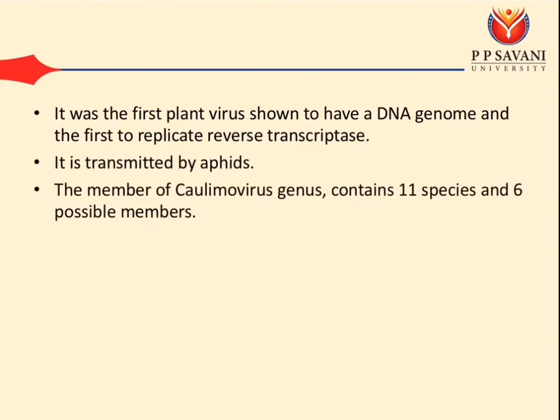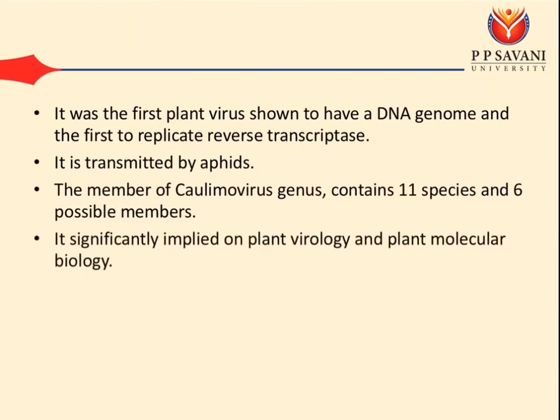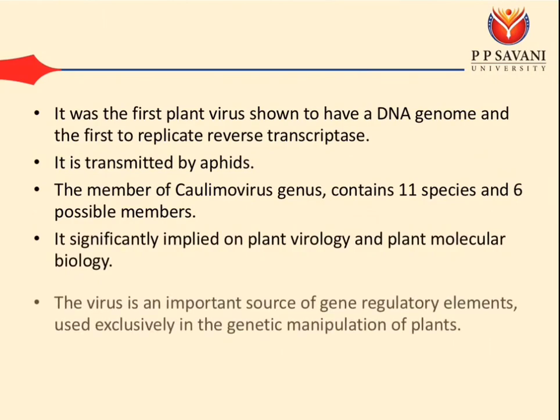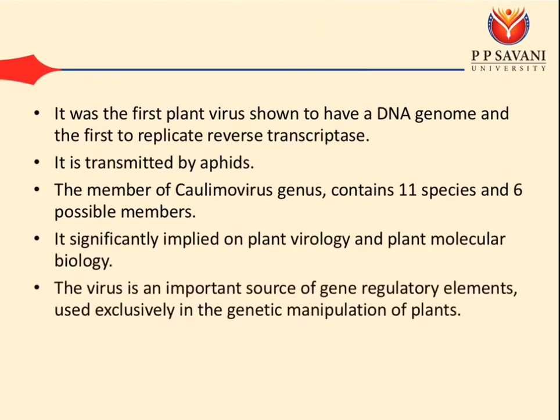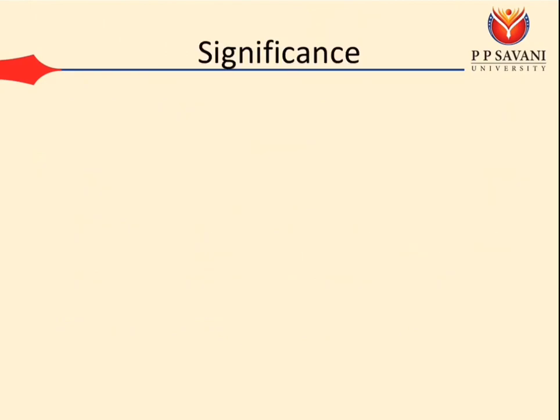The members of the Caulimovirus genus contain 11 species and 6 possible members. It is significantly implicated in plant virology and plant molecular biology. The virus is an important source of gene regulatory elements used extensively in the genetic manipulation of plants.